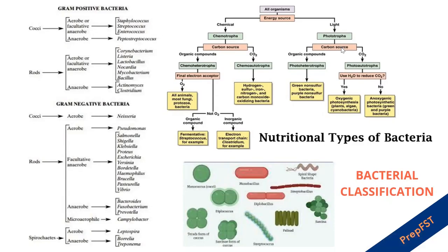Bacteria can be classified in a number of ways: gram positive and negative, on the basis of their shape, on the basis of their activity — aerobes, anaerobes, facultative aerobes — and also on the basis of their type of nutrition: chemotrophs, phototrophs, or heterotrophs. This slide has been curated with all the types of classification important for the exam, so feel free to screenshot it for future reference.